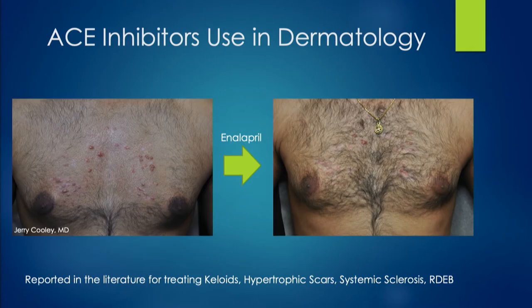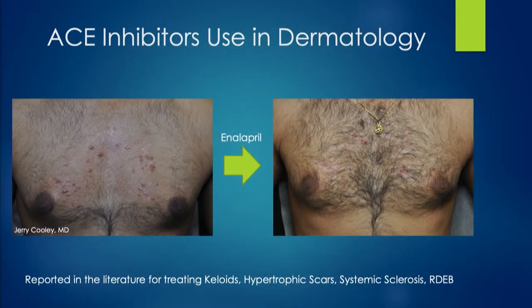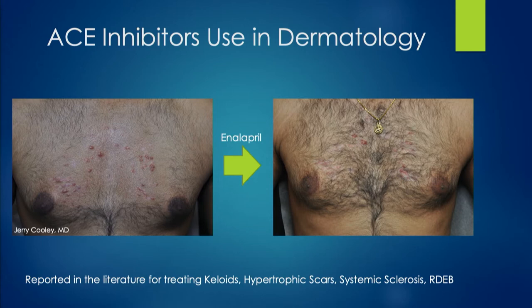Looking back in the literature, there actually is precedence for using ACE inhibitors in dermatology. A colleague of mine in Charlotte who does hair transplant had a patient come from India who got keloidal papules from punch biopsies on the chest. He tried ACE inhibitors, and it actually improved these keloidal papules, which were resistant to intralesional steroids. He has since used them for acne keloidalis nuchae on the back of the neck. Keloids, hypertrophic scars, systemic sclerosis, and recessive dystrophic epidermolysis bullosa have all responded to ACE inhibitors. So there is a precedent for using it in our field.